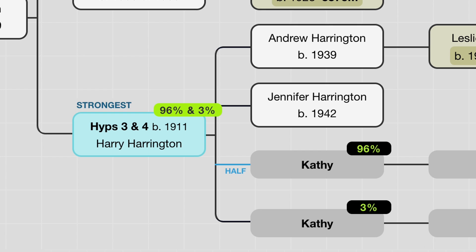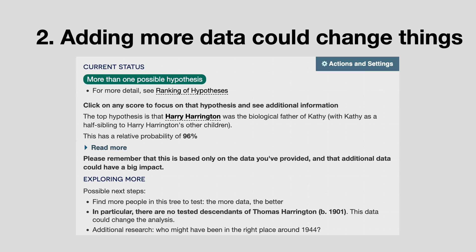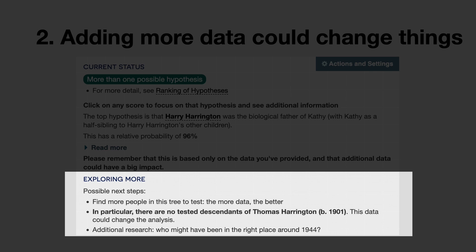Now it's very tempting when you see a nice juicy number like this to think yes, I've sorted it. So I have a few words of caution. First, make sure that you've considered all possible hypotheses — that's why I built the functionality that allows you to click a button and have the tool suggest them for you. The next thing to remember is the more data the better; adding new DNA matches could change the probabilities dramatically. You'll see within the status area at the top right of the tool, I actually call out particular lines where a new match could make a big difference. In this case the tool is pointing out that there are no tested descendants of Thomas Harrington, and if there were, this could change things a lot.